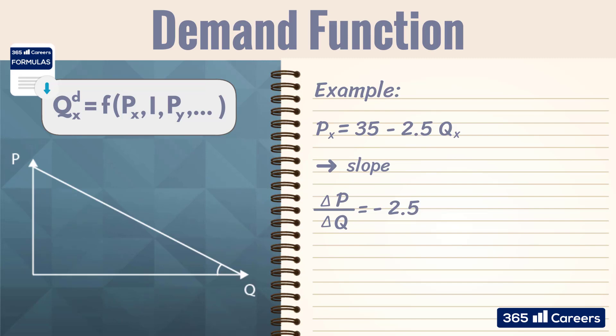In our example, it is equal to minus 2.5. This is the coefficient in front of quantity in the inverse demand function. p of x equals 35 minus 2.5 times q of x. That means that the price needs to decrease by 2.5 so that the quantity of cars demanded grows by one unit or one vehicle.